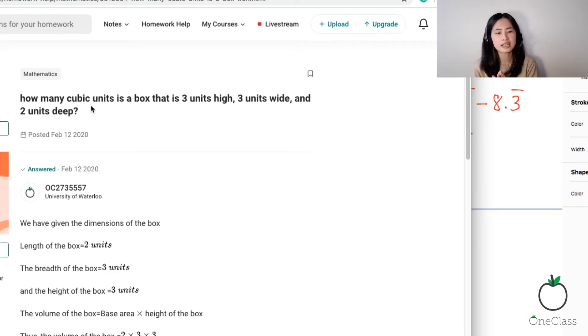It says, how many cubic units is a box that is three units high, three units wide, and two units deep? Okay, so first of all, just ask yourself, what exactly is this question looking for?